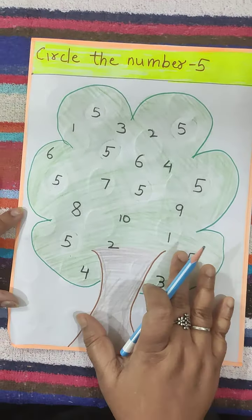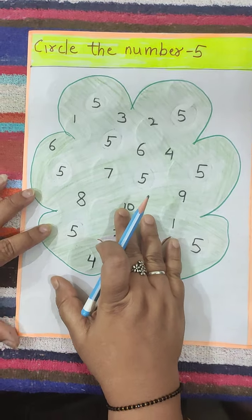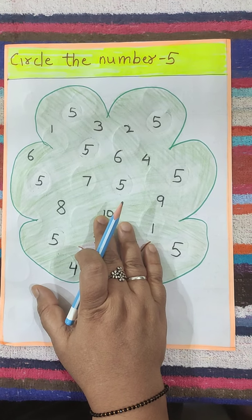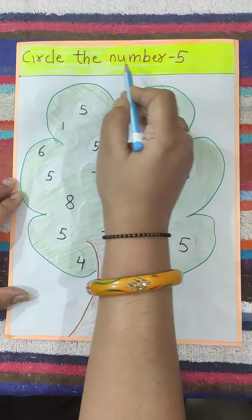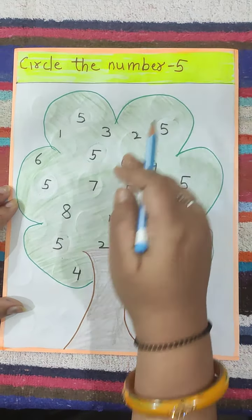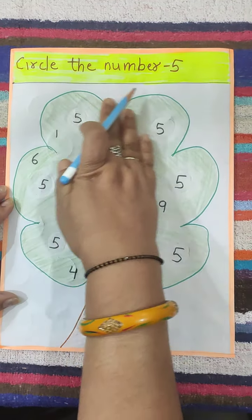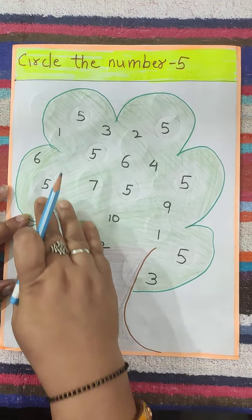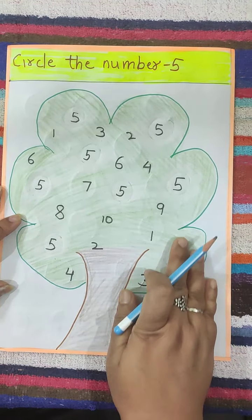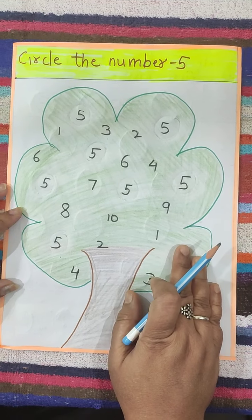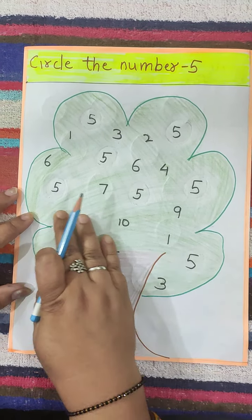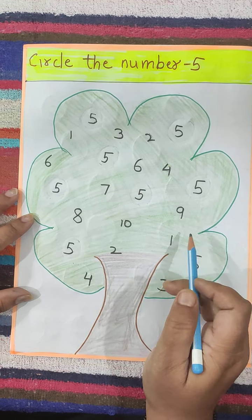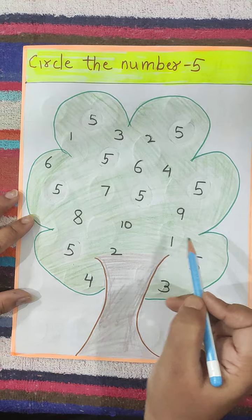Now see here children. Here a tree is made and what we have to do? We have to circle the number 5. There are many numbers written in this tree, but there are many 5s also. You have to find the 5s and circle them.